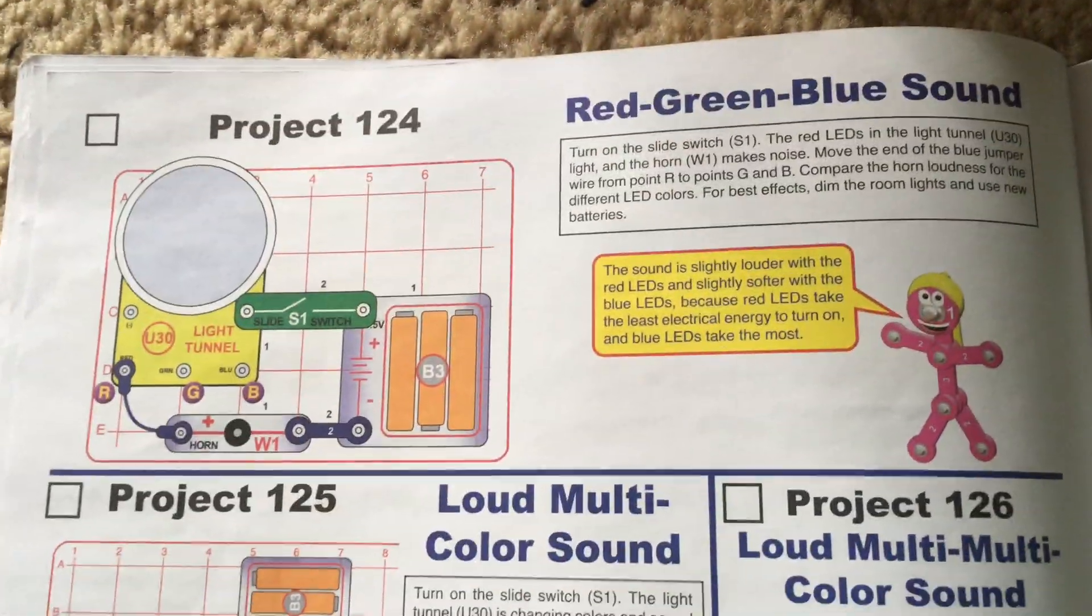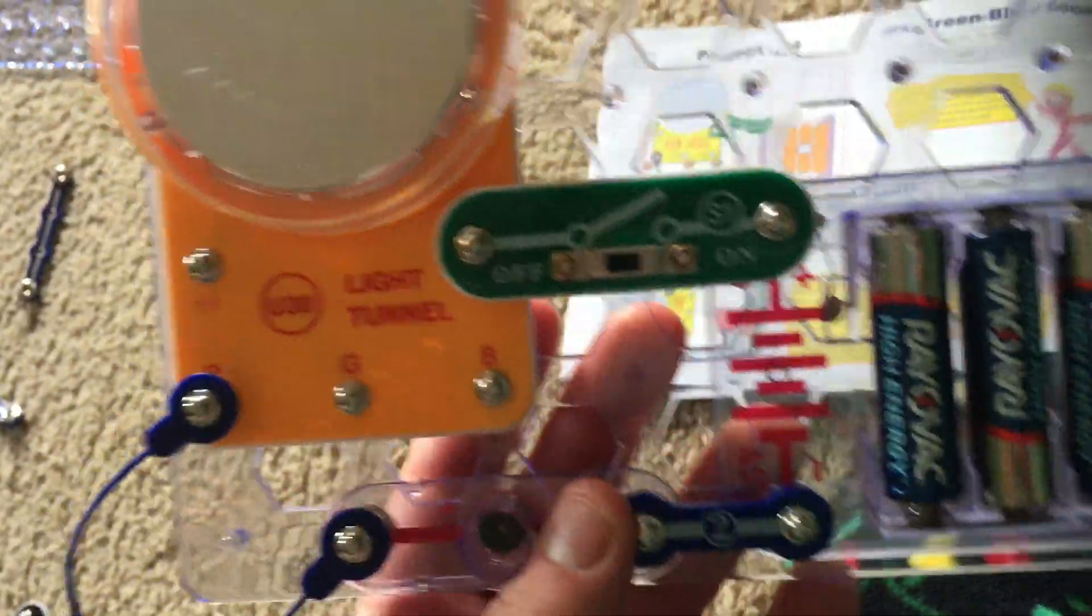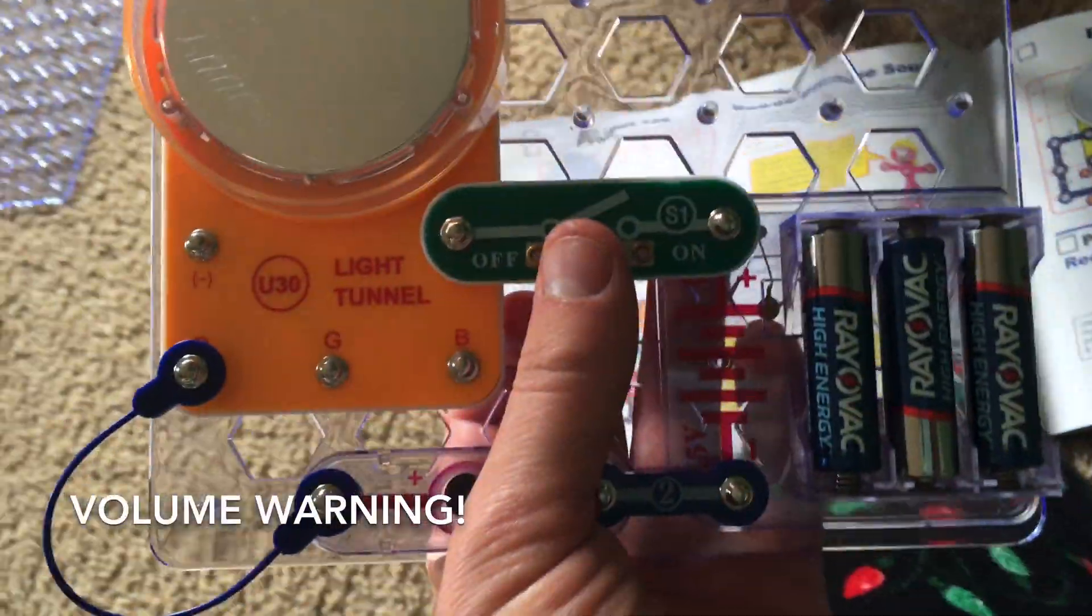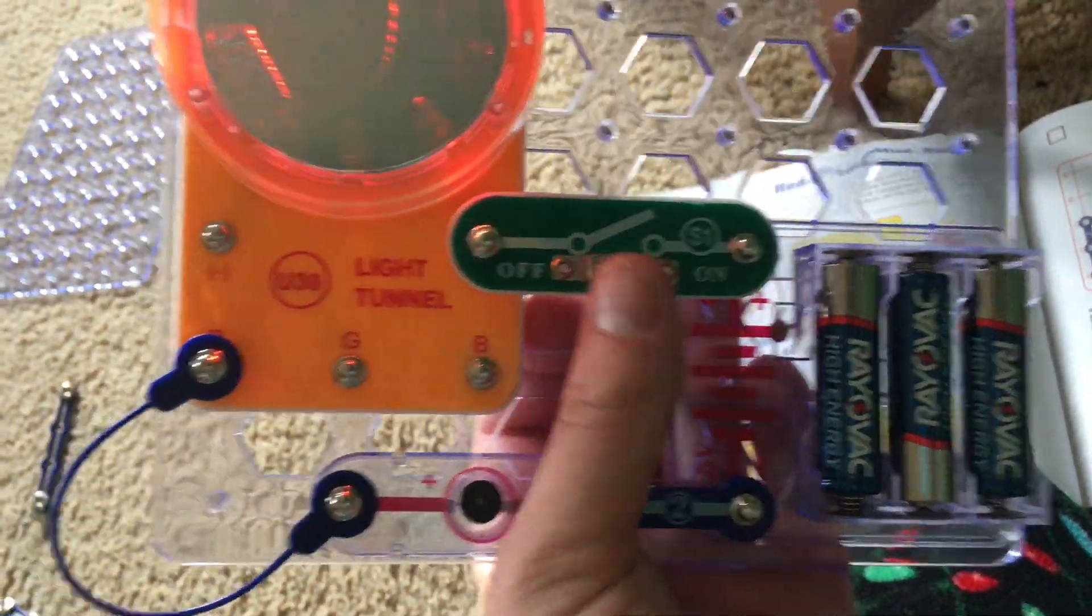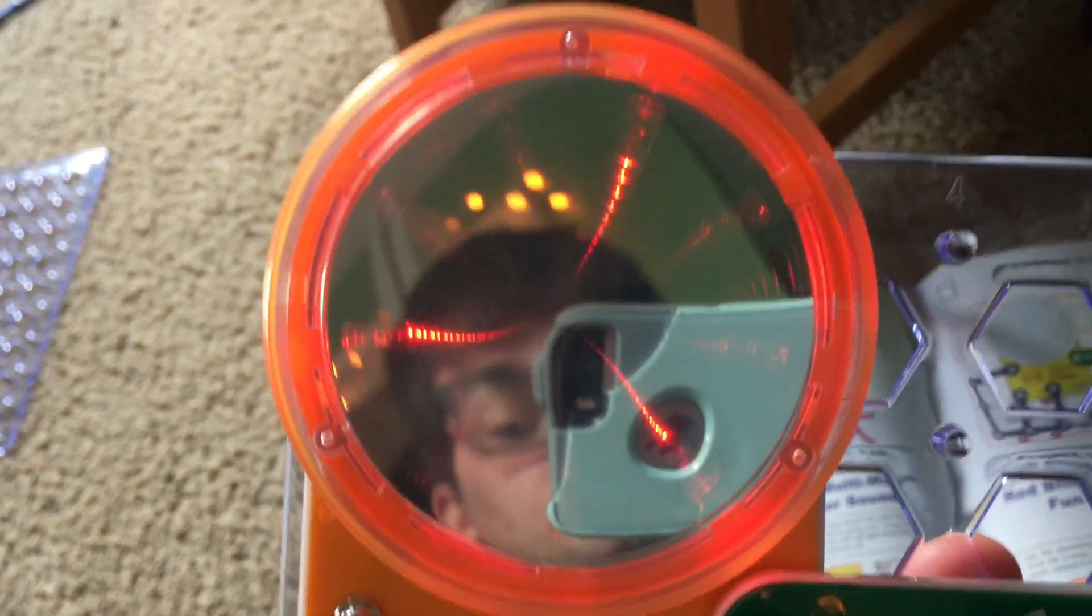For project 124, red green blue sound. We have the horn inserted and when we turn on the slide switch, turn down your volume, the horn sounds and only the red LEDs of the light tunnel come on.